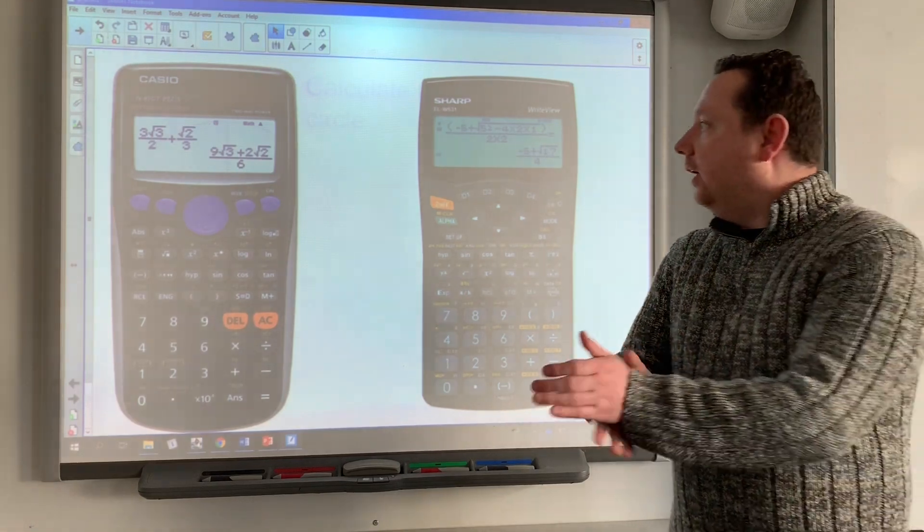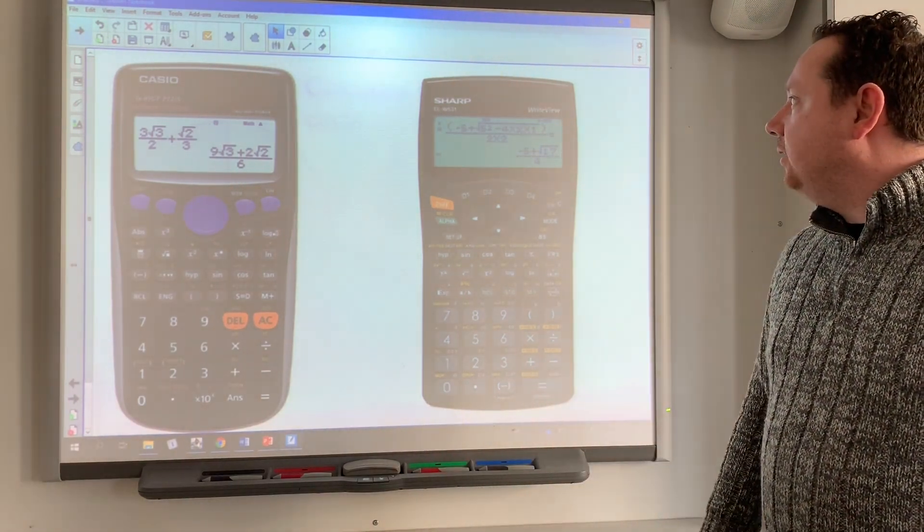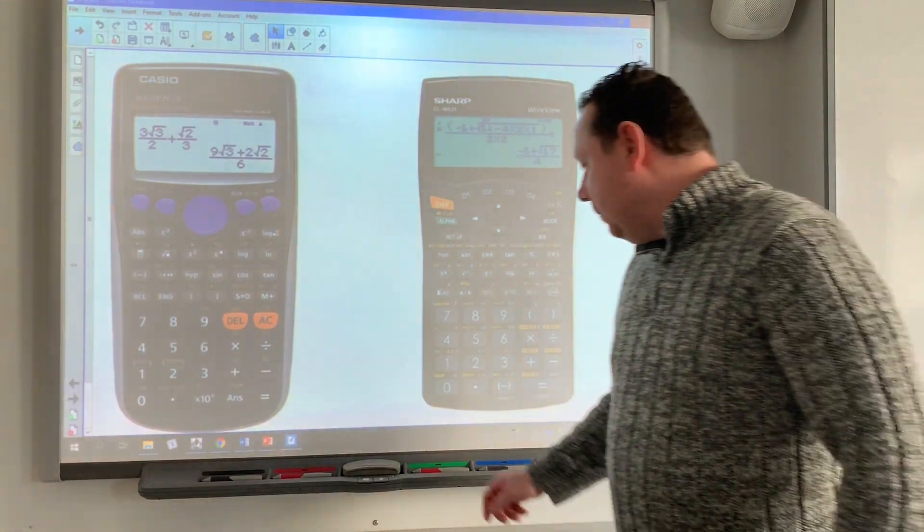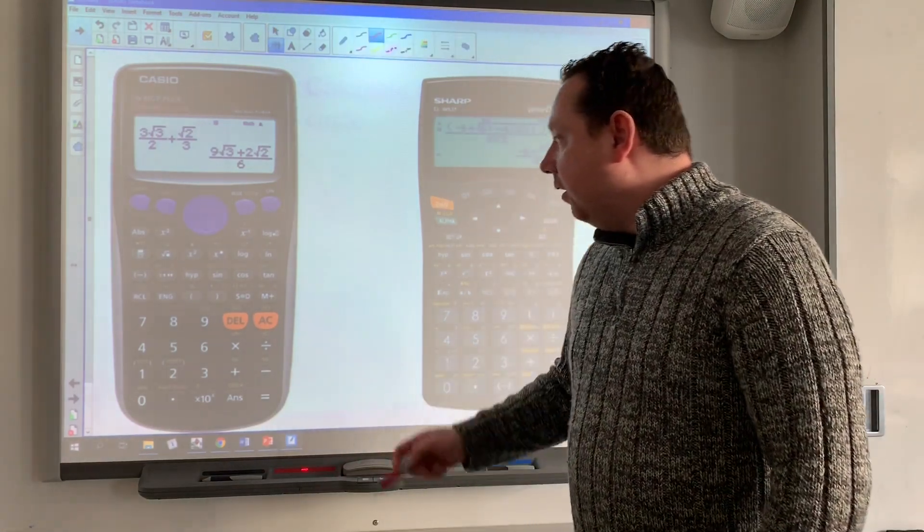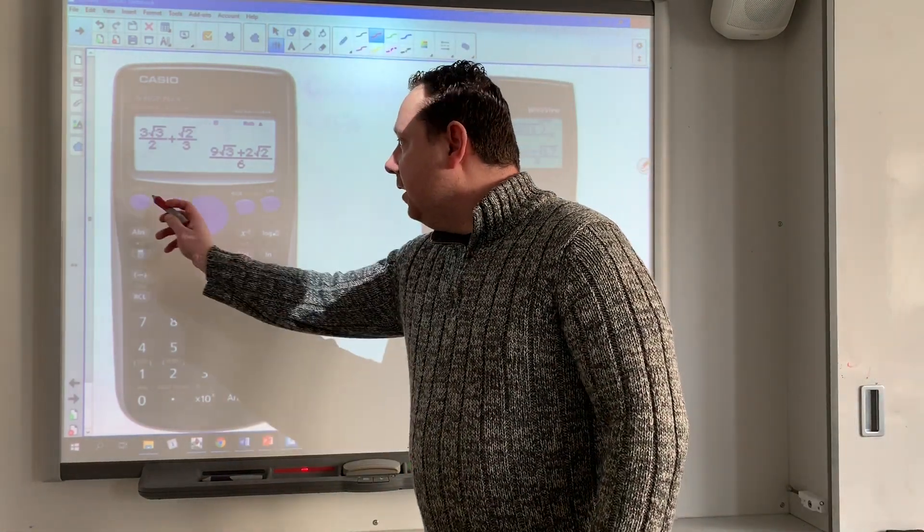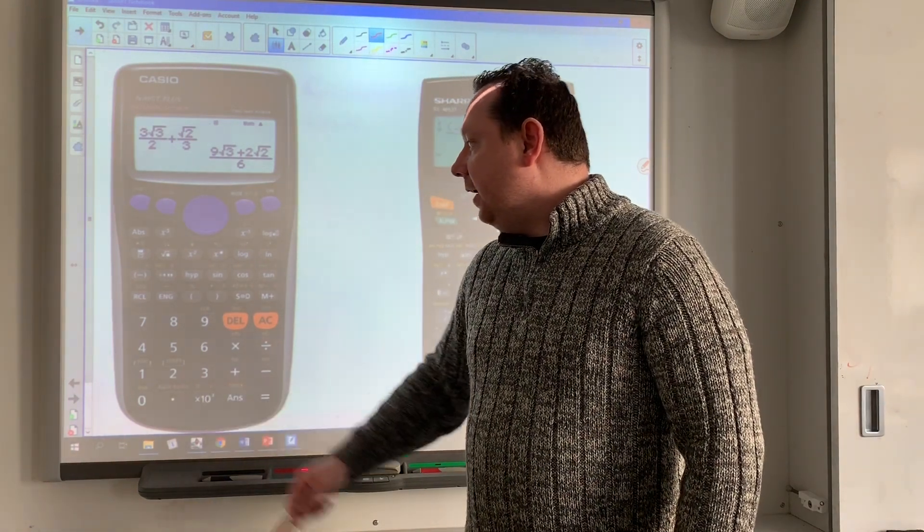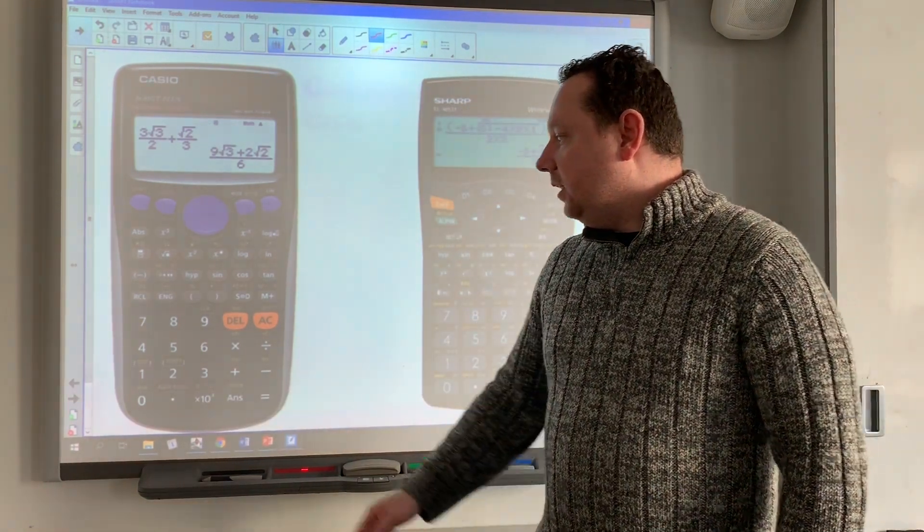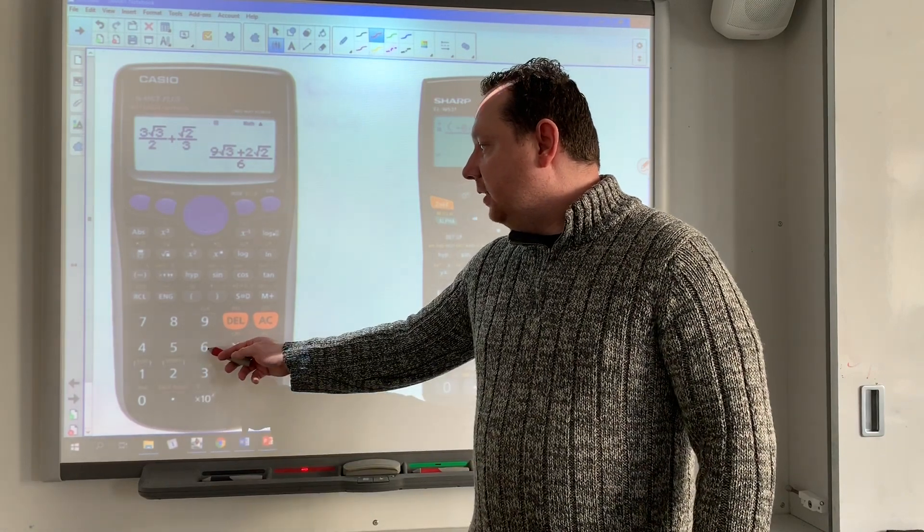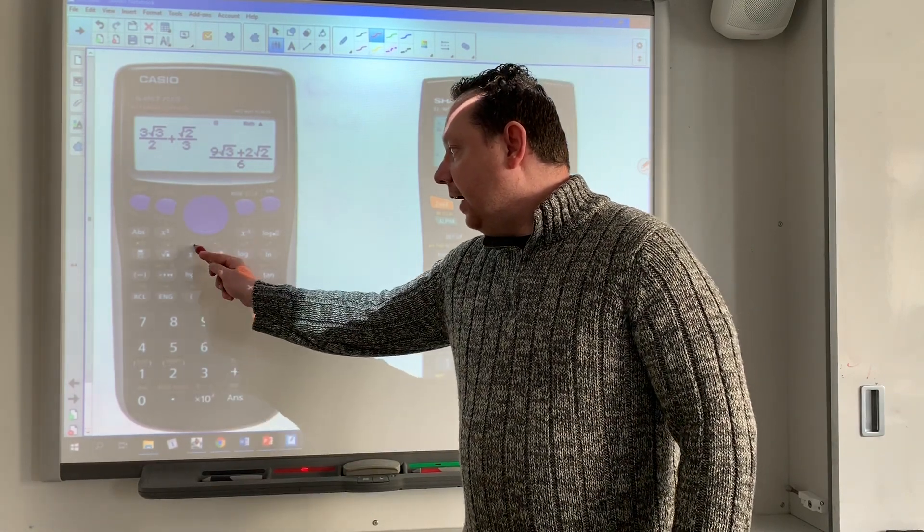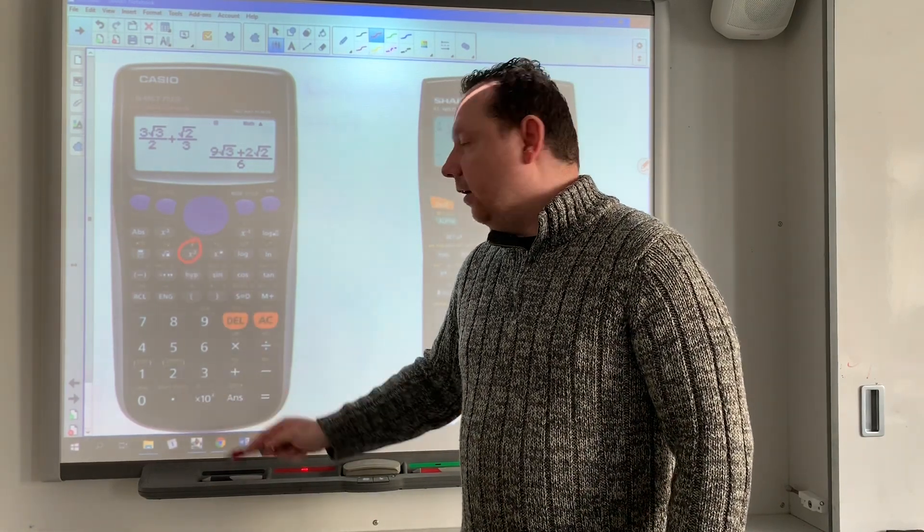Now I'm showing how to use a calculator. We've got two calculators here: Casio and Sharp. On a Casio, to get the π button, you press Shift and then the ×10^x button. If you want to square a number, say 6², press 6 then press the x² button.